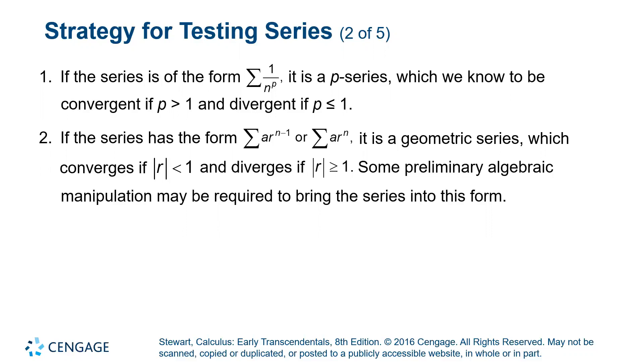If it's a geometric series which is something of the form a times r to the n minus 1 or r to the n, then that converges if the absolute value of r is less than 1 and diverges if the absolute value of r is greater than or equal to 1. And with geometric series you sometimes have to do a little bit of work to make your series look like a geometric series but as long as you can put it in this form then you can use these rules. So if you think your series is one of these there's no need to even consider a test, you can just knock it out immediately with our knowledge of p-series or geometric series.